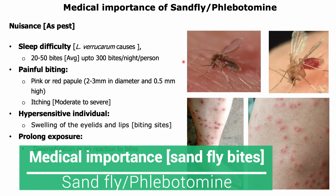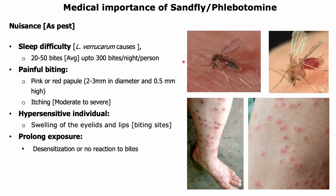Sandfly, or phlebotomine, is important as a pest and vector of different diseases of man and animal. Sandflies are very annoying biting pests. They bite repeatedly and cause a sharp, prickling sensation each time.